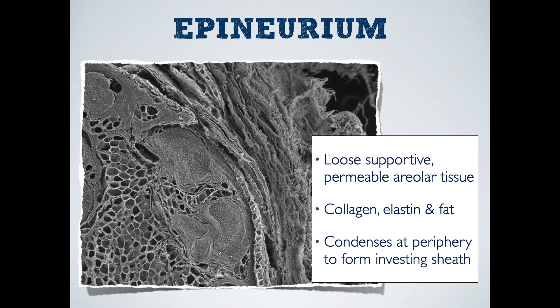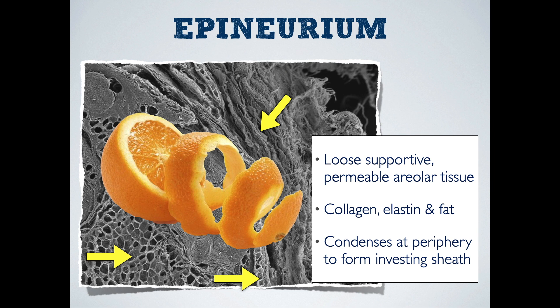And then we come to the stuff that is outside the fascicles — those remaining bits and pieces comprise the epineurium. It's mostly loose, permeable areolar tissue that allows for some shifting of fascicles within the nerve with limb movement. There's also a good amount of fat and collagen, but also elastin, which helps to resist longitudinal stress on the nerve. At the periphery, the epineurium condenses to form an investing sheath so that the nerve can slide between muscles and fascia. I like to think of the epineurium as a fruit with a soft inside and a thickened, denser rind on the outside.